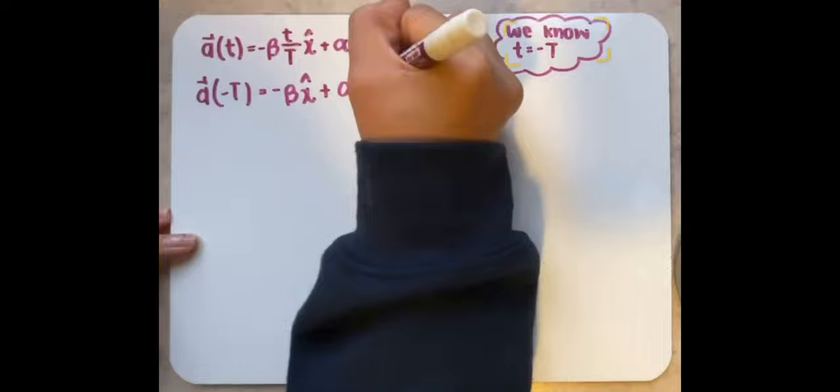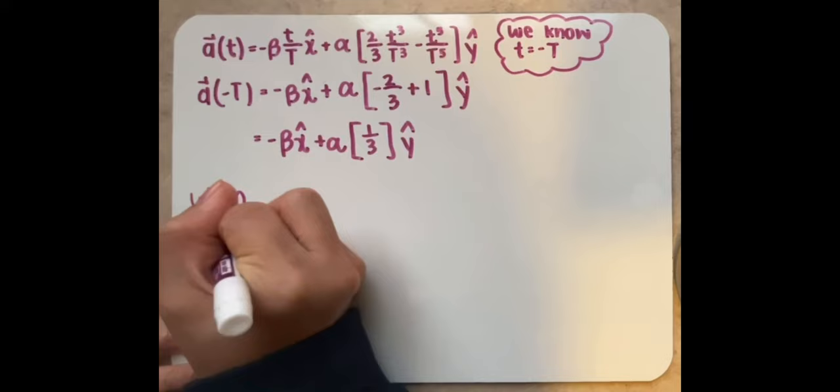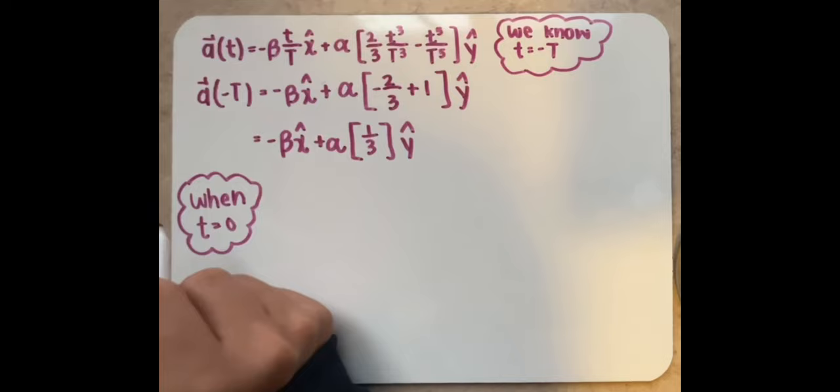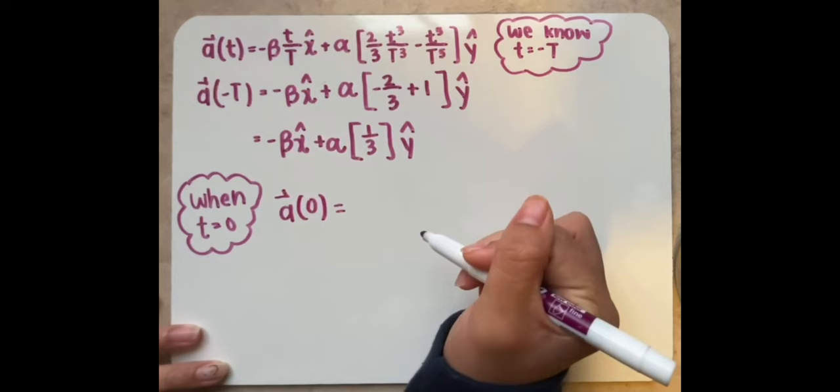Now that we've finished writing out the acceleration equation if t equals negative t, now we are going to focus on inputting t equals zero into acceleration, so we can see if the motion of the helicopter will just keep going in the same direction or turn.